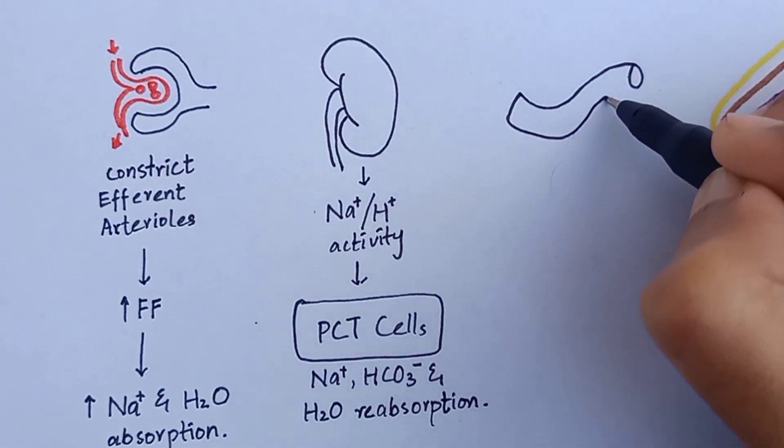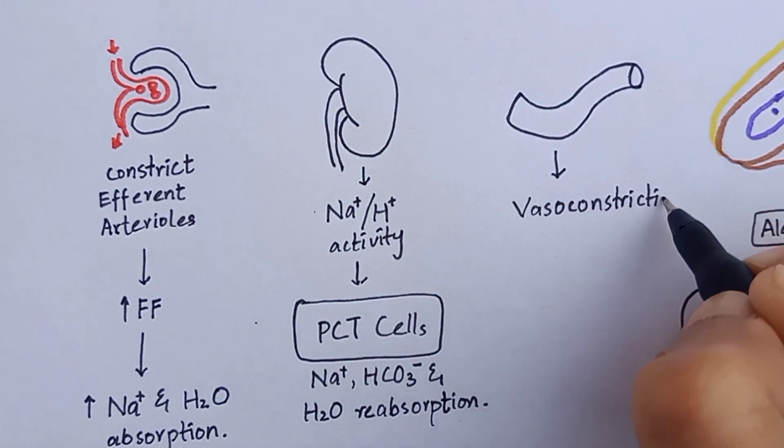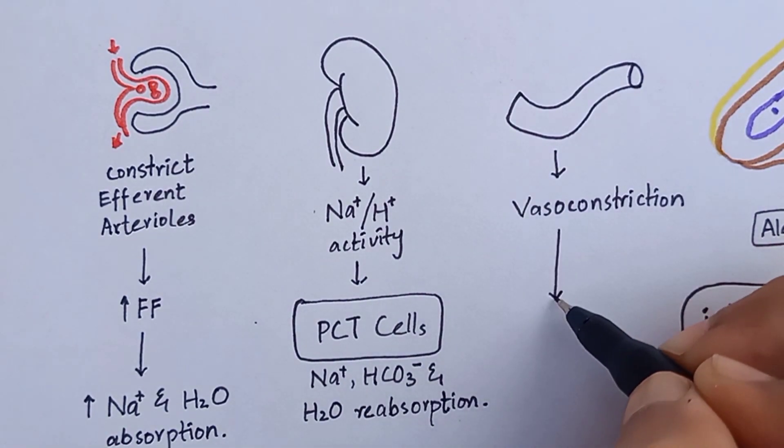The central action of angiotensin 2 includes peripheral vasoconstriction, which increases the blood pressure.